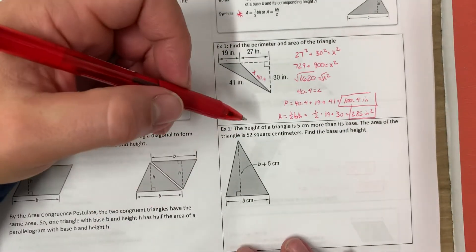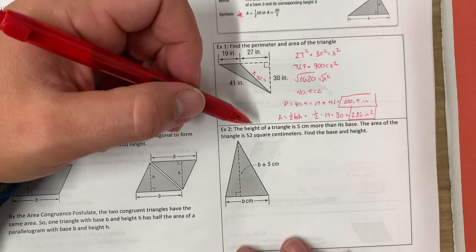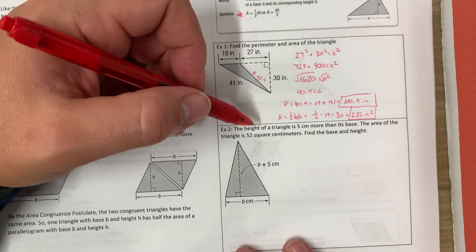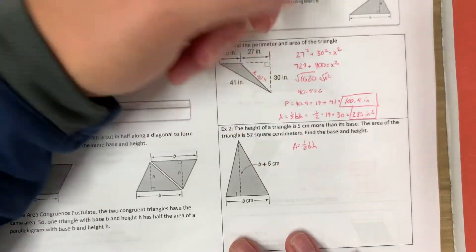And then the last one. The height of the triangle is five centimeters more than its base. The area of the triangle is 52 square centimeters. Find the base and height.